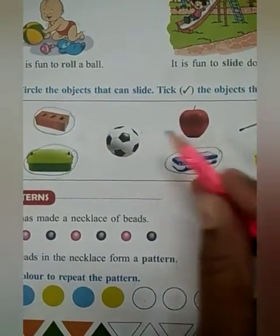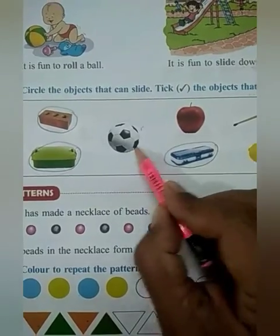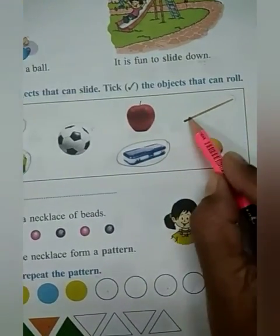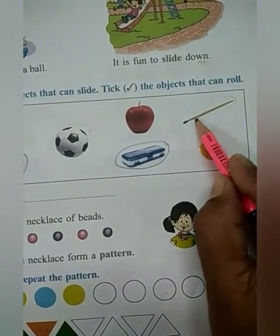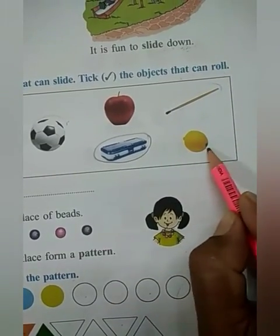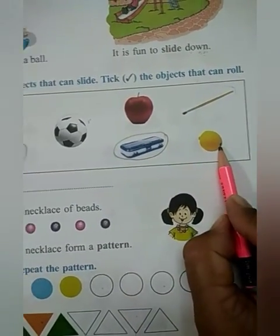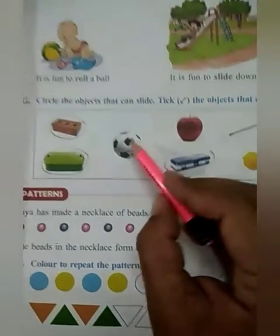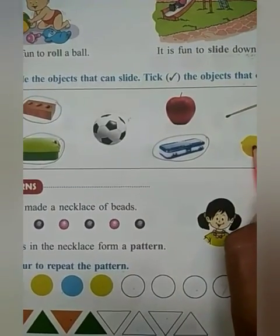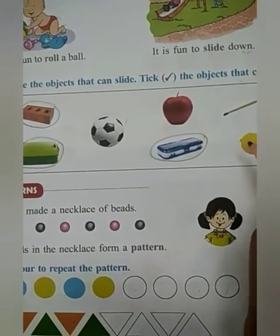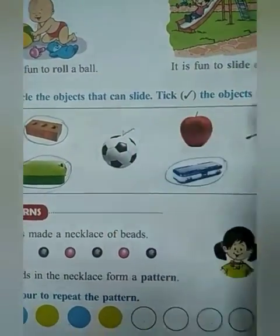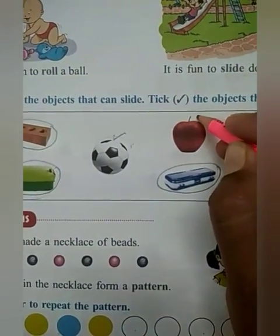And this is a football, this is a paintbrush, and this is a lemon. All these round-shaped objects will roll. So we have to put a tick mark on them.